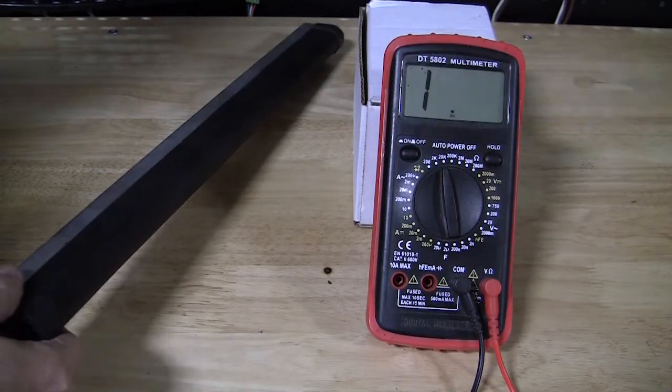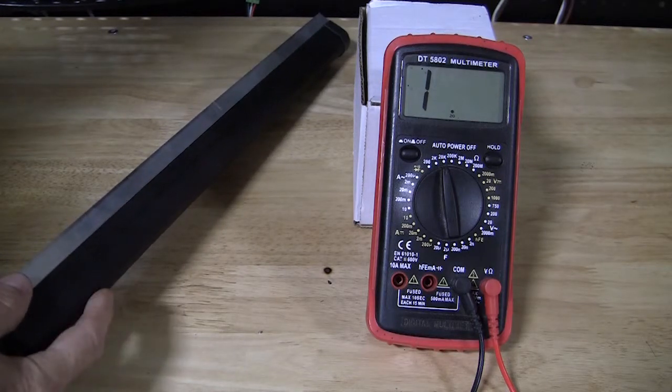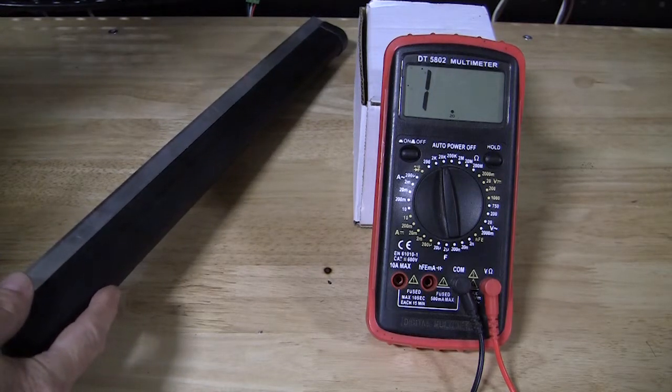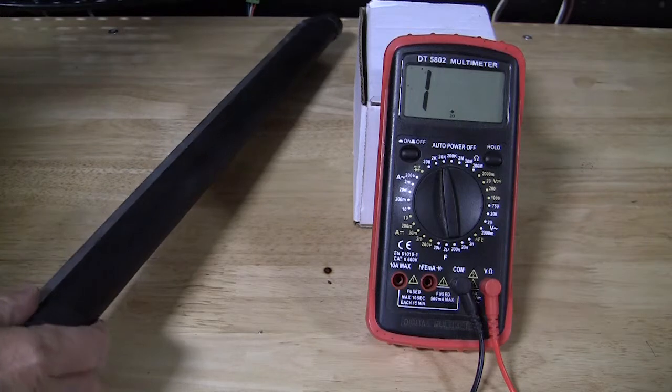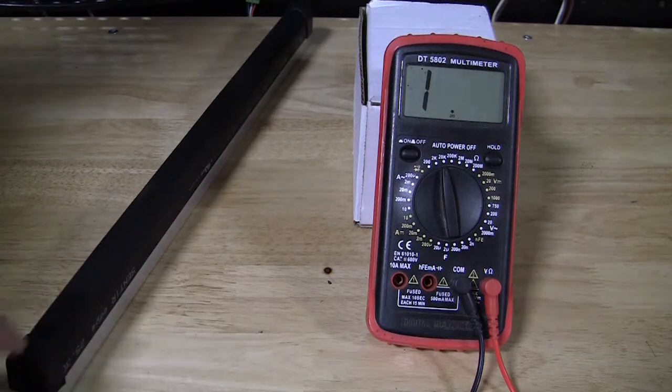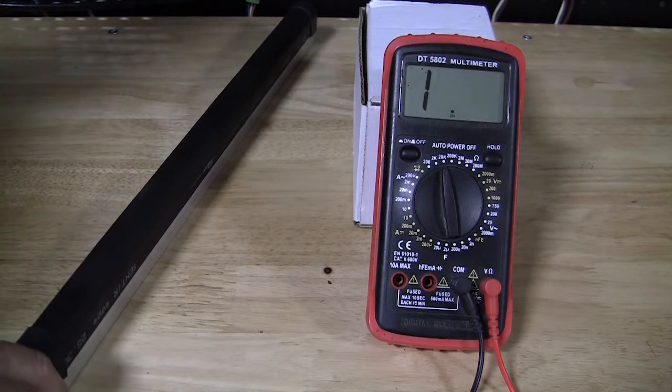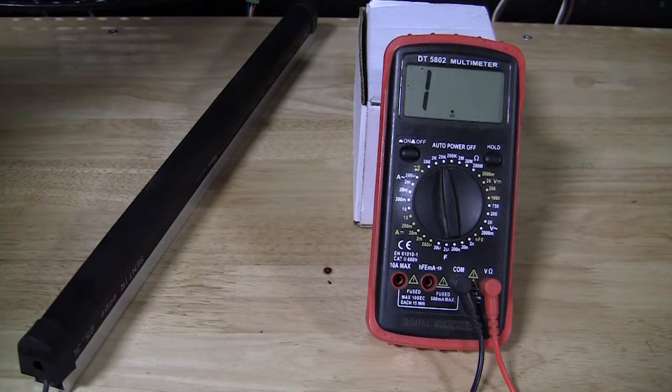So what we have here is a 10k resistive edge. This is an ASO edge. What's cool about the ASO edges is we can actually cut them to length in the field and install the connectors on the ends of them to adapt them to any length we need.